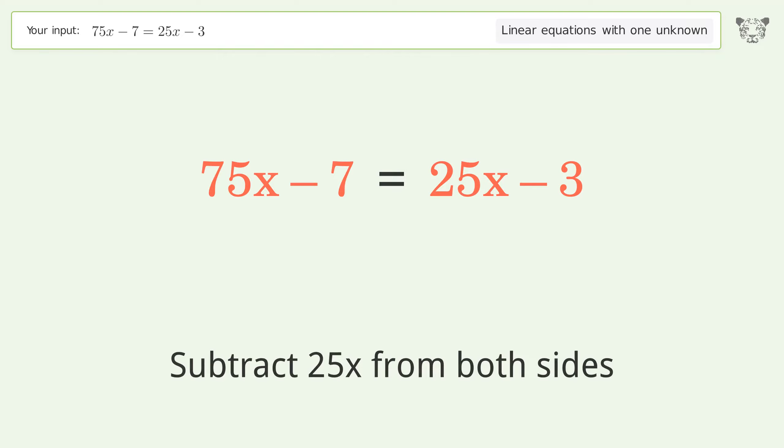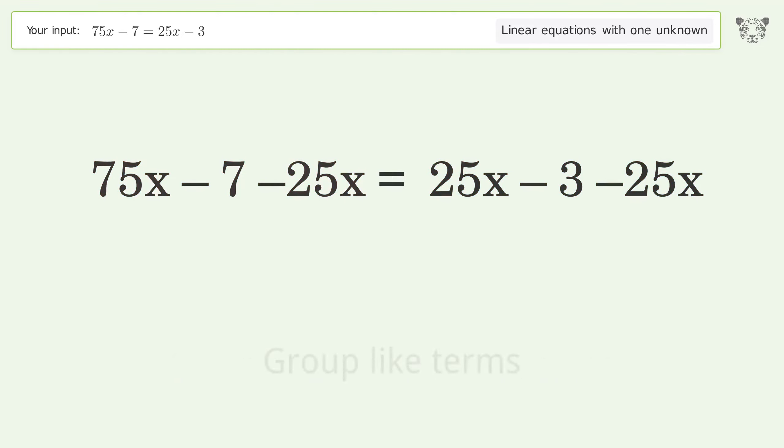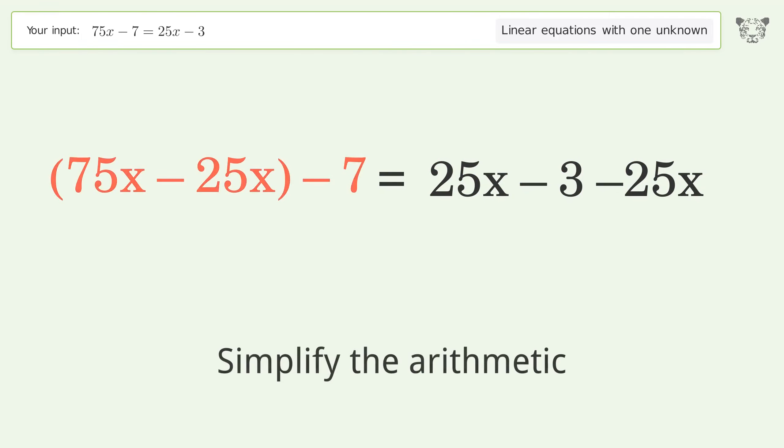Subtract 25x from both sides. Group like terms. Simplify the arithmetic.